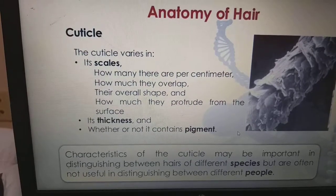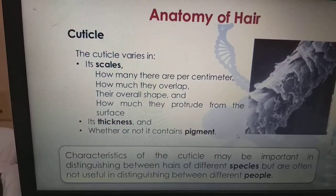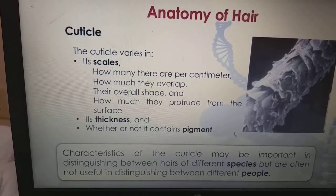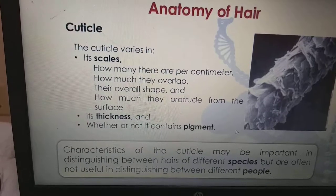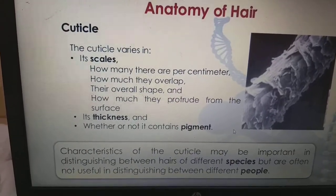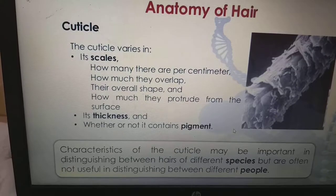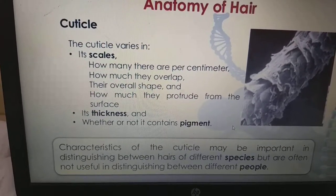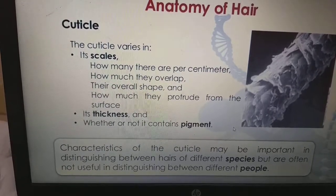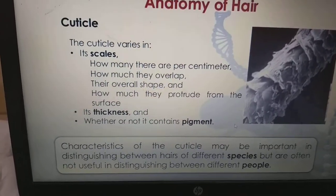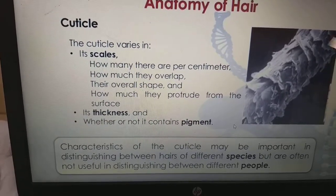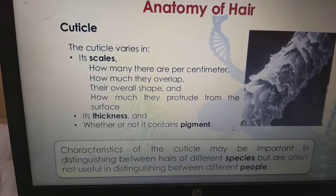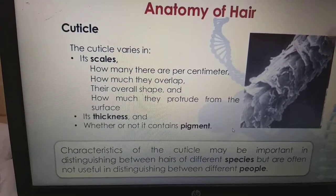Coming to the cuticle. The cuticle varies in its scales — how many there are per centimeter, how much they overlap, their overall shape and how much they protrude from the surface, its thickness, and whether or not it contains the pigment. Characteristics of the cuticle may be important in distinguishing between the hairs of different species, but are often not useful in distinguishing between different people. Here is a picture of the cuticle as seen under the microscope — we can see scales on the hair.